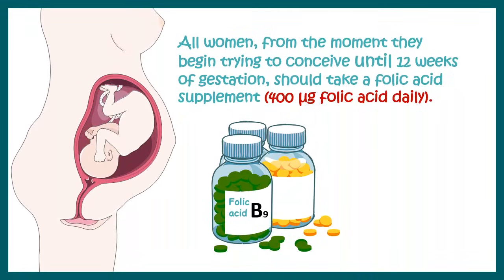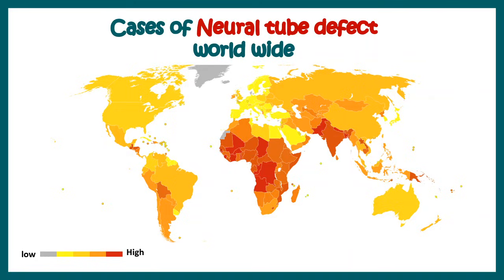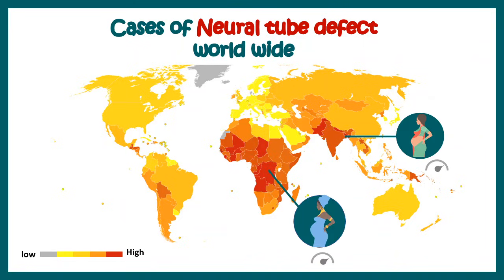That is why whenever a woman is thinking of conceiving, at that very moment she should start taking folic acid supplements — at least 400 micrograms of folic acid daily until the 12th week of gestation. This dietary awareness is often lacking in developing countries, which is why the incidence of neural tube defects is higher in third world countries such as Africa and India compared to the US and other developed nations.